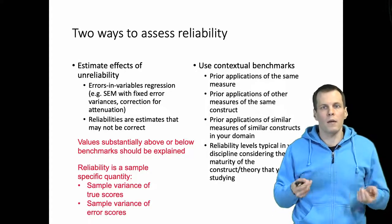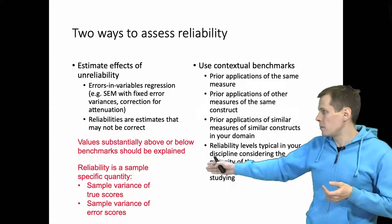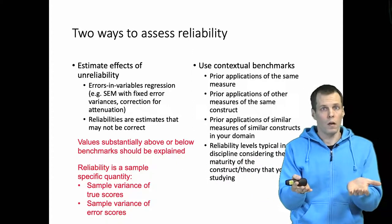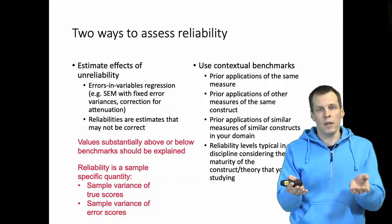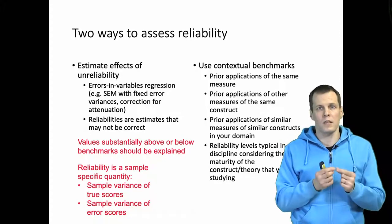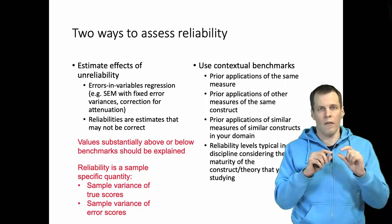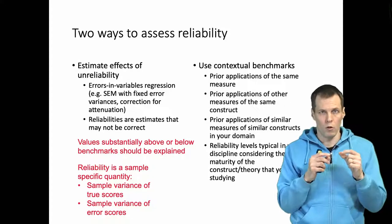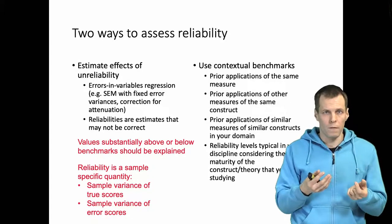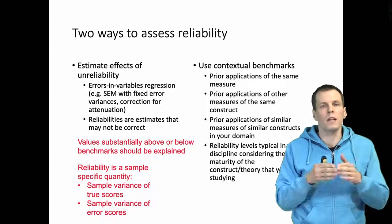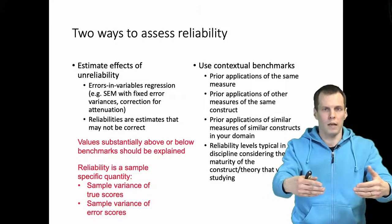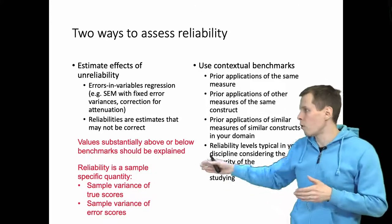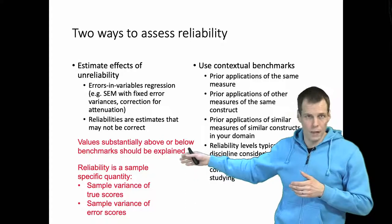And remember that reliability depends on two different things. It depends on the sample variance of true scores. So if you have low reliability, it does not necessarily mean that your measurements are imprecise. It can also mean that the total variation in the sample is very small, which means that the relative precision—which reliability indices quantify—is small. It does not mean that there's more error variance in any absolute sense, but it's about the relationship between the true score variance and the error variance. And both of course affect the reliability statistic.